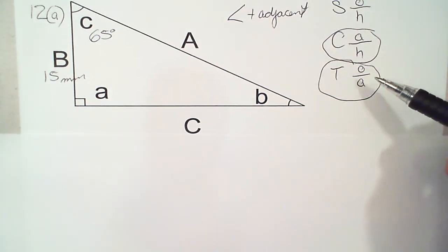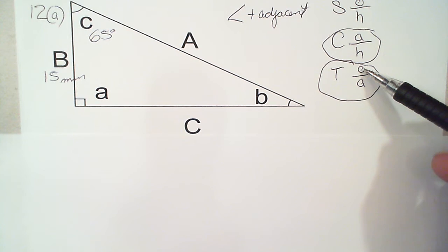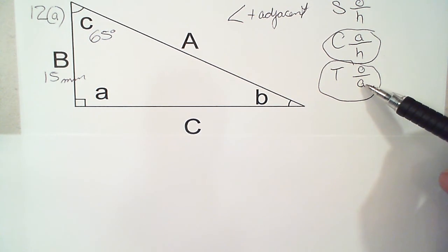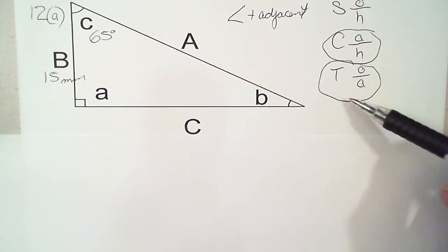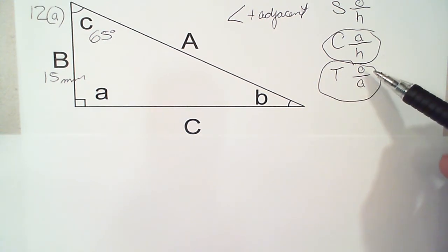If we go to our formula here, we have an opposite and we have an adjacent. That is what we're going to use. We've got the adjacent and we've got the angle, and those two are going to help us find the opposite.